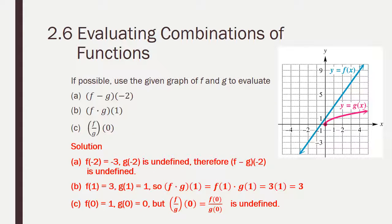Okay, for negative 2, when we go, we find negative 2 on the x-axis and go to the blue line. We find that f has a y value of negative 3. However, g of negative 2 does not exist. There is no y value when x is negative 2 for g. So a is undefined.